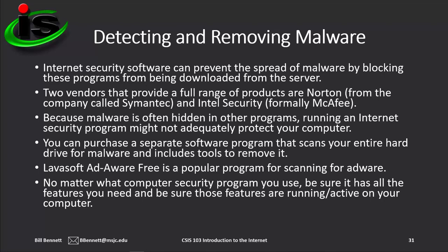Internet security software can prevent the spread of viruses, worms, Trojan horses, and other forms of malware by blocking them from being downloaded from the server. Many companies offer different versions of internet security software customized for the needs of individuals, small businesses, and large organizations. An individual or small business might be interested in installing internet security software on several computers using a single license. A large organization might be interested in software features that allow its IT department to update all of the company's computers automatically. Two vendors that provide a full range of products are Norton, from a company named Symantec, and Intel Security, formerly McAfee.